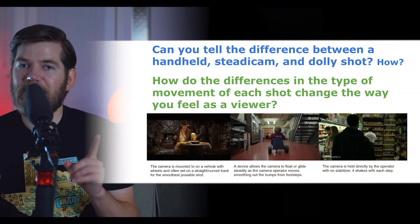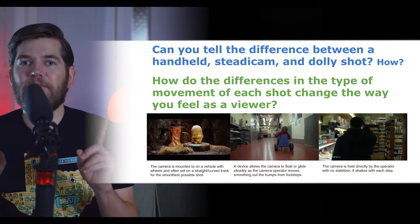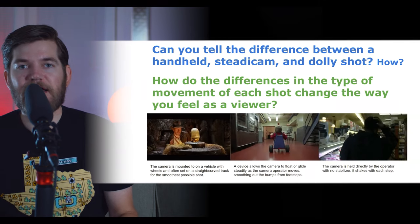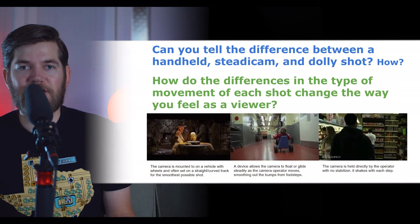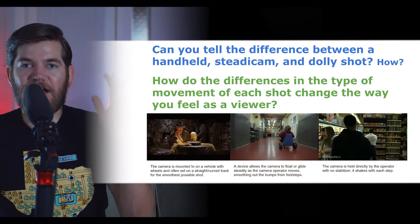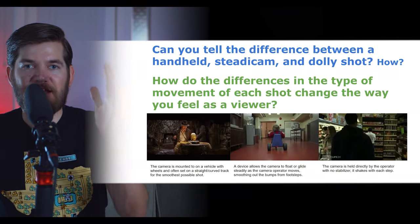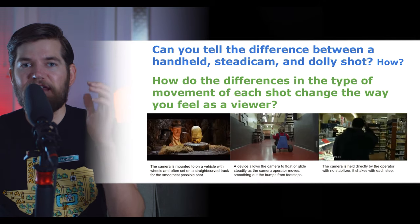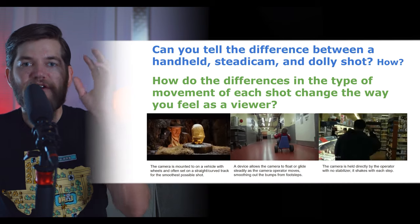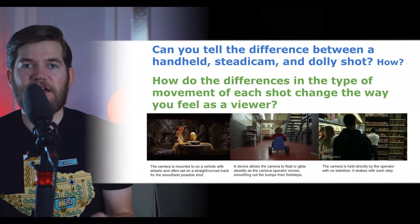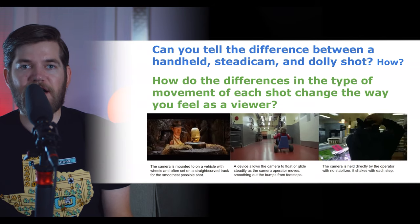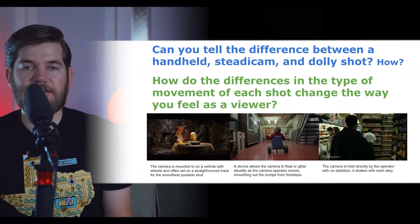That is the key — the Steadicam is not as smooth as a dolly shot, but it is smoother than handheld, placing it in the middle. The handheld shot translates all of the camera operator's movements into the shot. The bumps of moving up and down, the shakes as the camera operator moves forward, are all translated into the shot. None of that shock is absorbed, and all of the shake is present in a handheld shot.